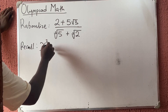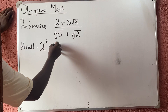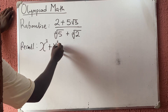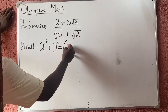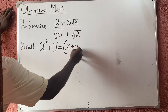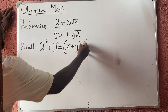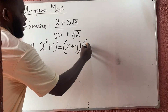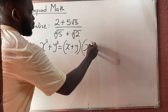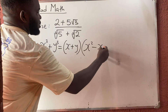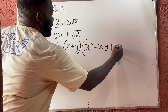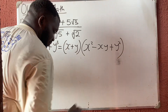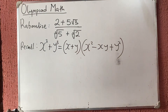...you should recall that x cubed plus y cubed is the same thing as x plus y, multiplied by x squared minus x·y plus y squared. You should know this identity.